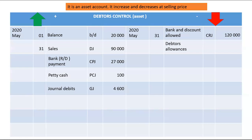The total of your debtors allowances in the debtors allowances journal will be recorded on the credit side of your debtors control account — in this case it's 15,000. Any general credits relating to debtors, such as bad debts, will be recorded in the general journal: we debit bad debts and credit the name of the debtor we are writing off. Any other errors impacting debtors control that should be credited will be totaled as general credits — in this example, 3,500.